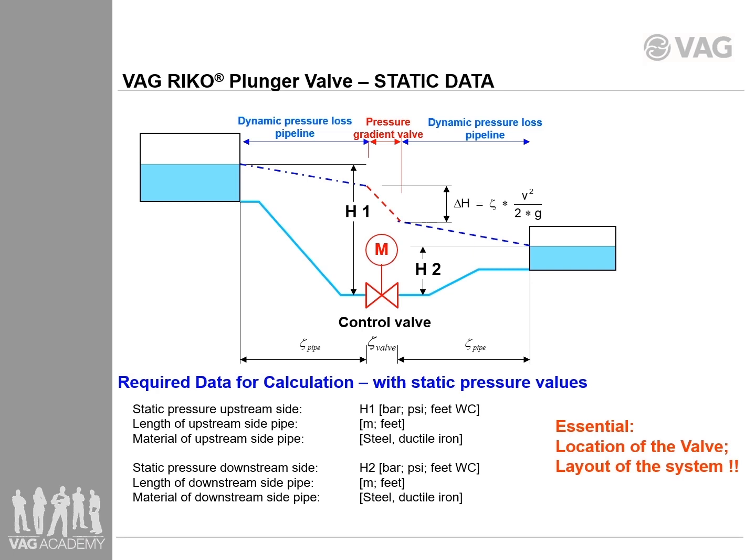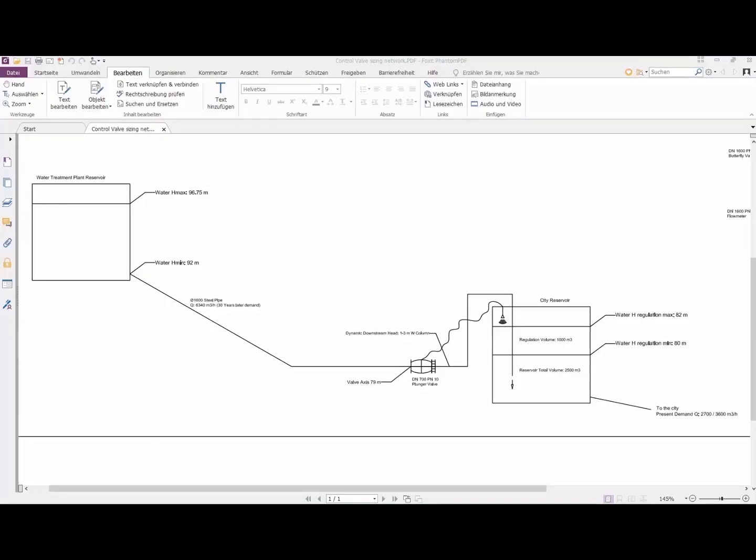And finally, you will need the required flow rate, ideally minimum and maximum required flow rates. Once you have these values, you can enter them in the appropriate fields in USCAD Control and calculate the result.